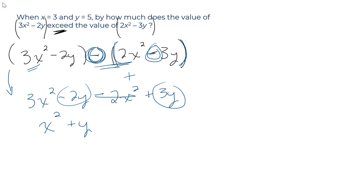Now we'll plug in the values they give us. x equals 3, so we have 3 squared plus y equals 5. So we have 9 plus 5, which gives us 14.